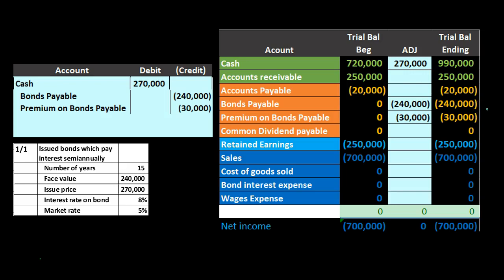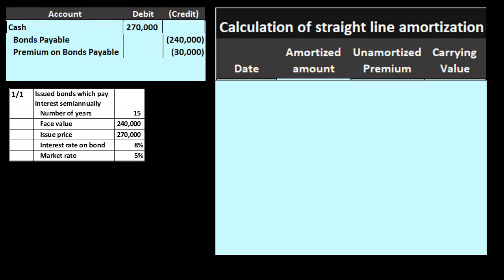Now we'll go through the process of recording the interest. We have 15-year bonds paid semi-annually, so we need to record the interest and also reduce the premium over time. Remember, at the end of the bonds we only pay back $240,000, not $270,000. We'll start by amortizing the premium using the straight-line method. Note that the effective method is preferred under GAAP, but the straight-line method is appropriate when the difference is not material. It's a simplified method, and we'll cover the effective method later.